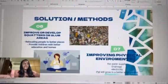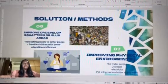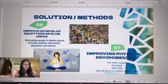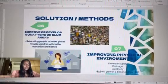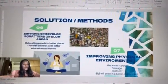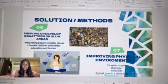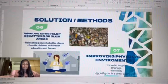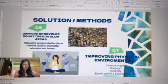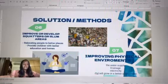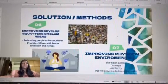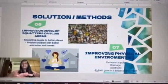Next, we have improving the physical environment — for example, water supply, sanitation, waste collection, electricity, drainage, road paving, and street lighting — so that people can grow in a better environment.